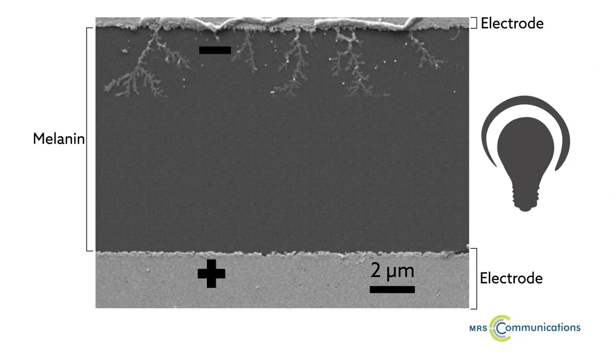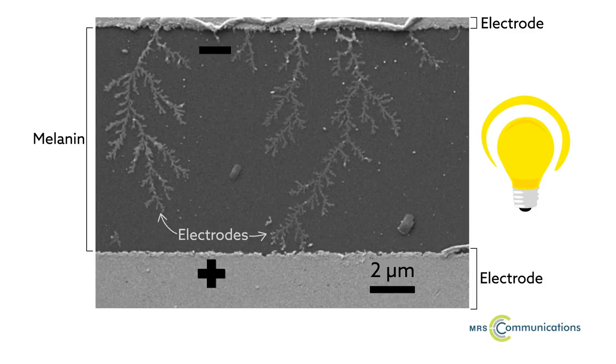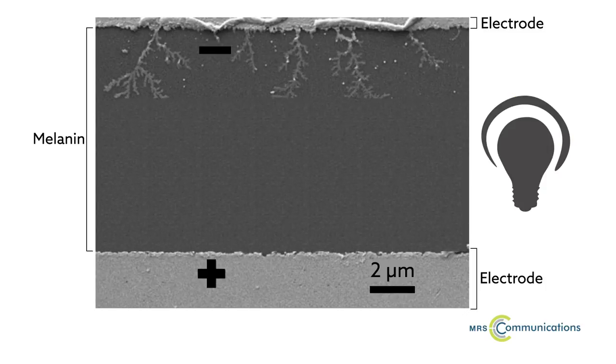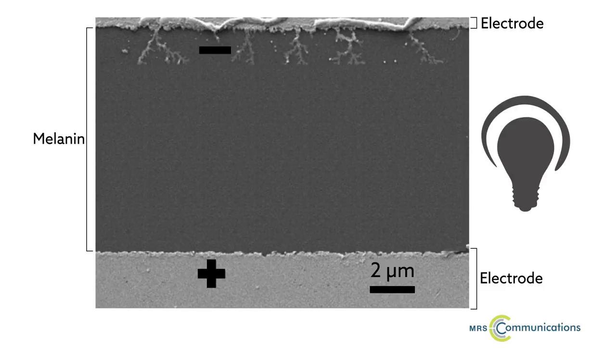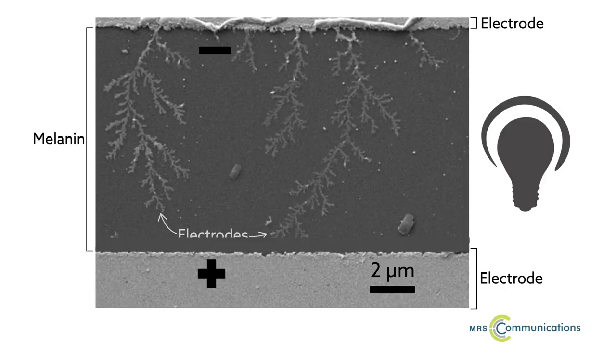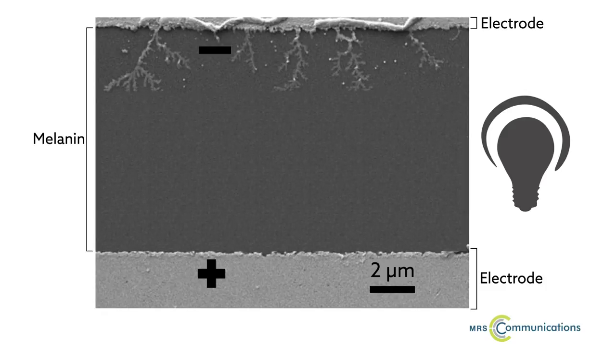Researchers have shown that melanin can act as a switch when sandwiched between metal electrodes, turning on and off under different applied voltages. It seems like a simple trick, but that switching behaviour is critical to the operation of any computing device.